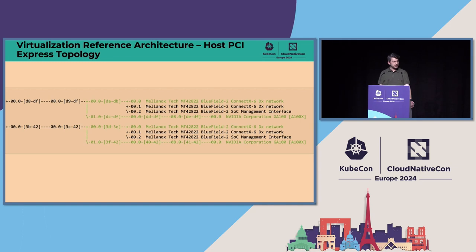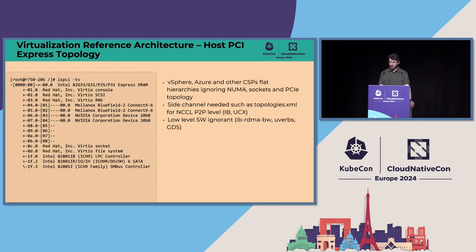On the same NUMA node, we have a PCI switch with a Mellanox NIC and a GPU. Most CSPs providing a VM give you a flat hierarchy, so you don't know which GPU can talk to which Mellanox NIC — you lose your PCI topology information. Usually the VM gets a side channel such as a file like topology.xml to set NIC peer-to-peer levels, which higher-level libraries like UCX can read. But lower-level libraries — InfiniBand RDMA libraries, IB verbs, GDS — don't know anything about that.